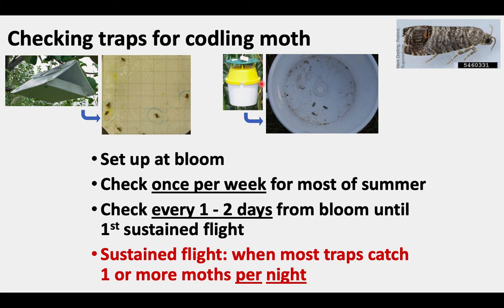When checking traps for codling moth, whether you have a sticky trap or a bucket trap, you need to open them up and see what's inside. We are looking for our target moth caught down in the goo of the sticky trap, or some dead moths in the bottom of the bucket trap. These traps are set up at bloom and should be checked once per week for most of the summer, but every one to two days from bloom until the first sustained flight — this very critical period in early summer.